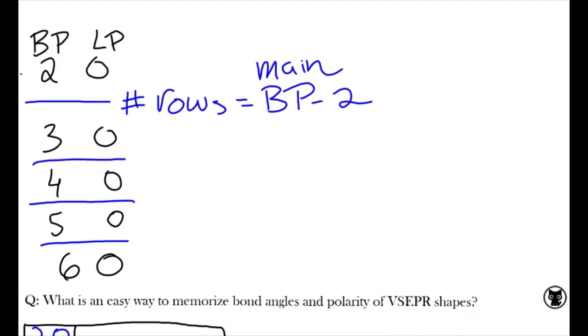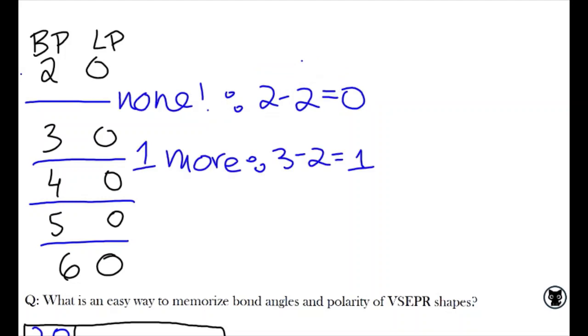To know how many rows to add under each main row, subtract the left side's number by 2. So the row 2-0 will have no additional rows under it, since 2 minus 2 is 0. But the row 3-0 will have one more row underneath it.